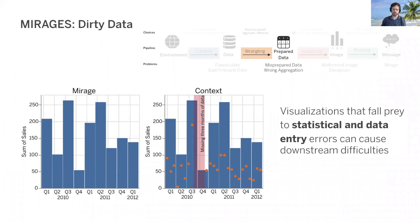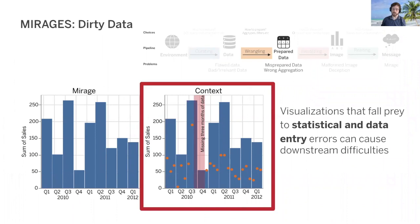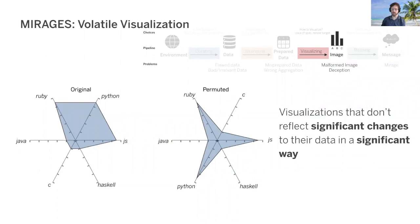Now let's look at a few concrete examples where things have gone wrong. Mirages can come from dirty data due to statistical or data entry errors. Sometimes something as innocuous as defining the bins of a histogram or other bar chart can mask underlying data quality issues, which might in turn lead to incorrect inferences about a trend. For instance, here it appears that sales are down in the fourth quarter of 2010, yet upon closer inspection, we see that there are several months of missing data.